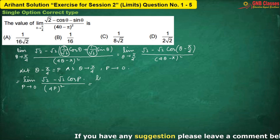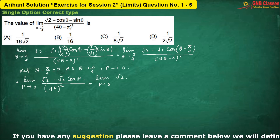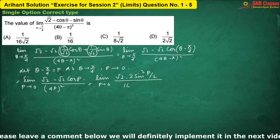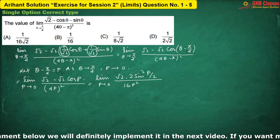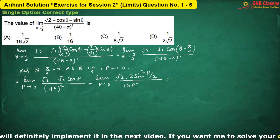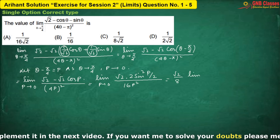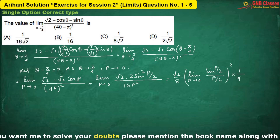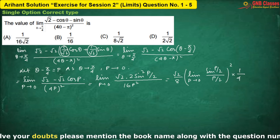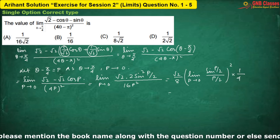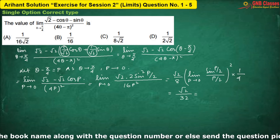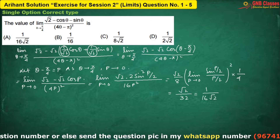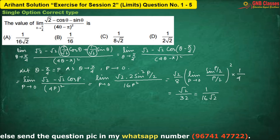Now, let me take root 2 common from the numerator. 1 minus cos p will give you 2 sine square p by 2, and it's 16p square in the denominator. So we are having. Therefore, my final answer will be, or it can be written as 1 by 16 root 2. Therefore, option A is correct.